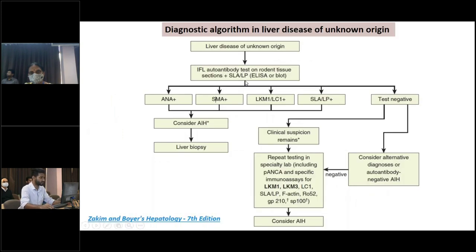This is the diagnostic algorithm for liver disease of unknown origin. It is recommended to investigate for primary antibodies such as ANA, SMA, LKM, and SLA. If any of these are positive, autoimmune hepatitis should be considered and liver biopsy is recommended. However, if the primary antibody panel is negative and there is strong clinical suspicion, a repeat panel along with an extended panel is recommended before ruling out autoimmune hepatitis. Seronegative autoimmune hepatitis can also be considered in such a scenario.